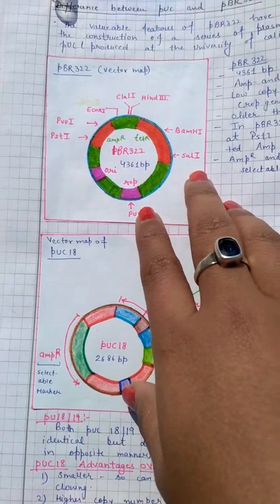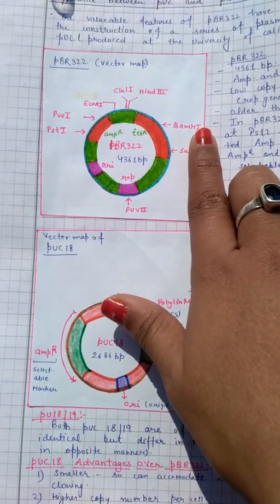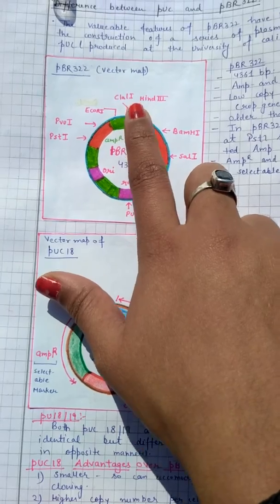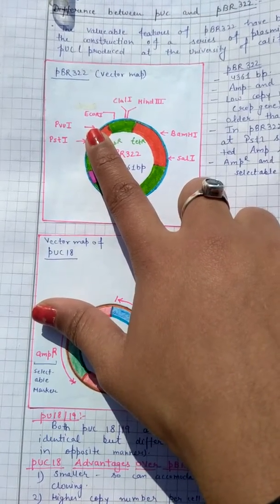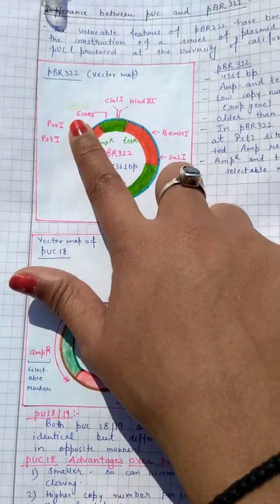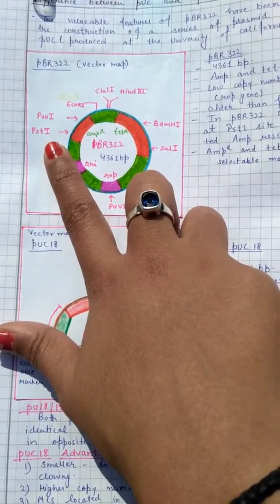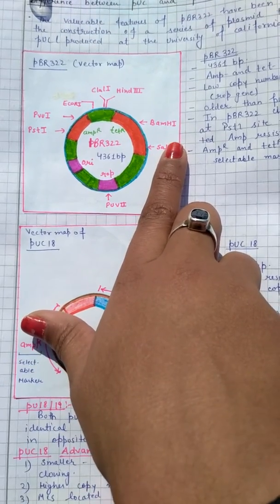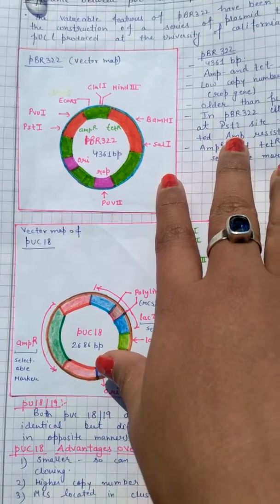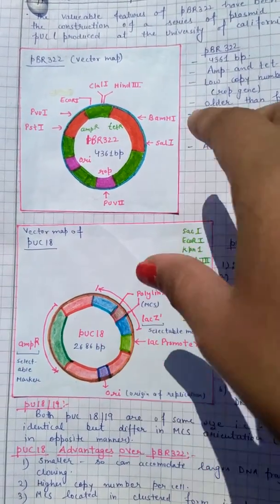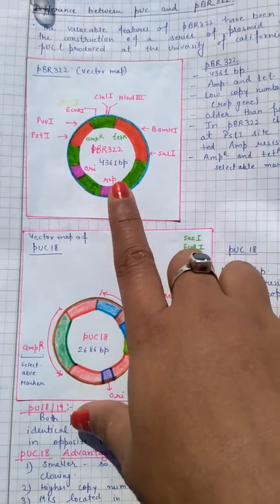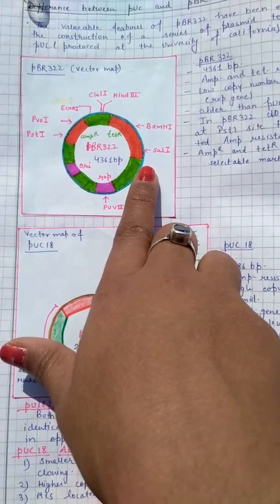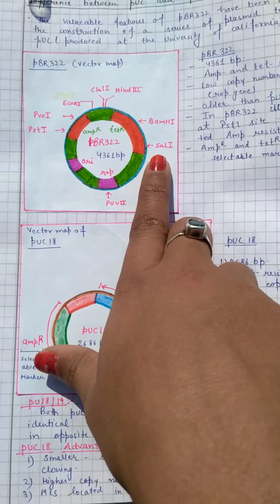The second feature is that there should be some Multiple Cloning Sites (MCS) where restriction enzymes can work. In pBR322 you can see restriction sites such as SalI, BamHI, PstI, HindIII, EcoRI, ClaI — all these are restriction enzyme sites where restriction enzymes can work, cleave sequences at their specific sites, and give us cohesive ends or blunt ends where we can ligate our desired gene.